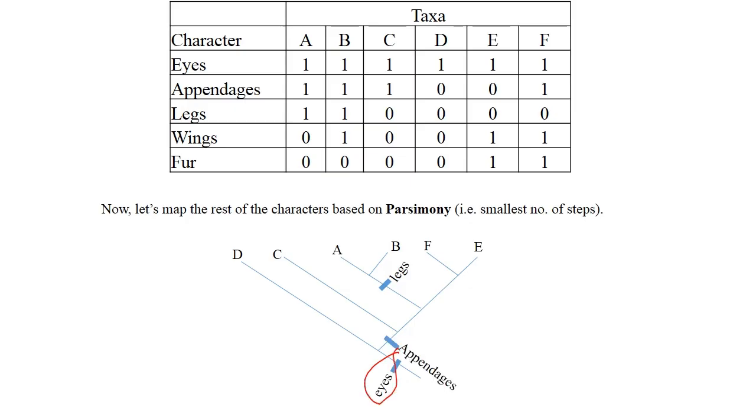Next is appendages. Appendages are in A, B, C, and F. So we put appendages down here and then we use an X sign to indicate that E has lost appendages.